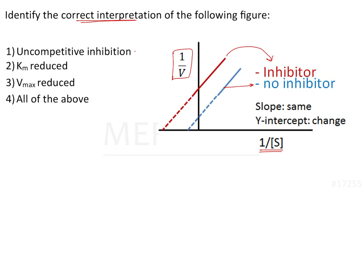The options state that the graph denotes either uncompetitive inhibition, reduced Km, reduced Vmax, or all of the above. We should know that this comparative slope given in the graph denotes a type of enzyme inhibition, and the two important parameters affected in different types of enzyme inhibition are Km and Vmax. Based on this, the curve will be determined.